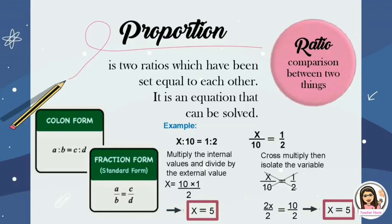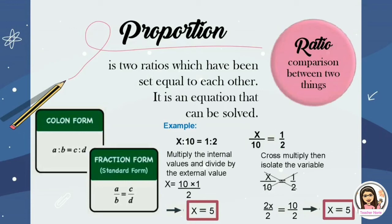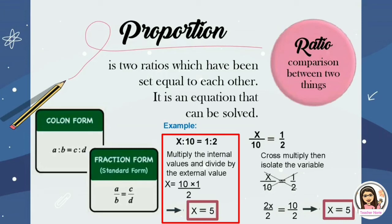Proportion can be written in two ways: in colon form and in fraction form. We have here an equation containing two ratios which have been set equal to each other, and we are going to look for the missing value. The given is x is to 10 and 1 is to 2. We multiply the internal values and divide by the external value: 10 multiplied by 1 equals 10, and 10 divided by 2 equals 5. The missing value is 5, so x equals 5.